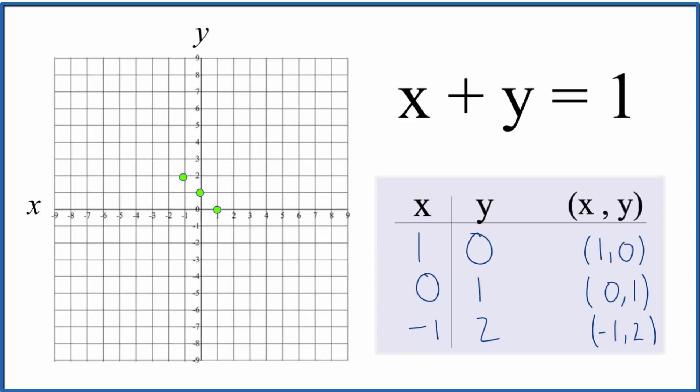We could even put a line through it, put arrows here to show it goes to infinity. And that's the graph for x plus y equals 1. We could put other points here and they end up on this line as well.